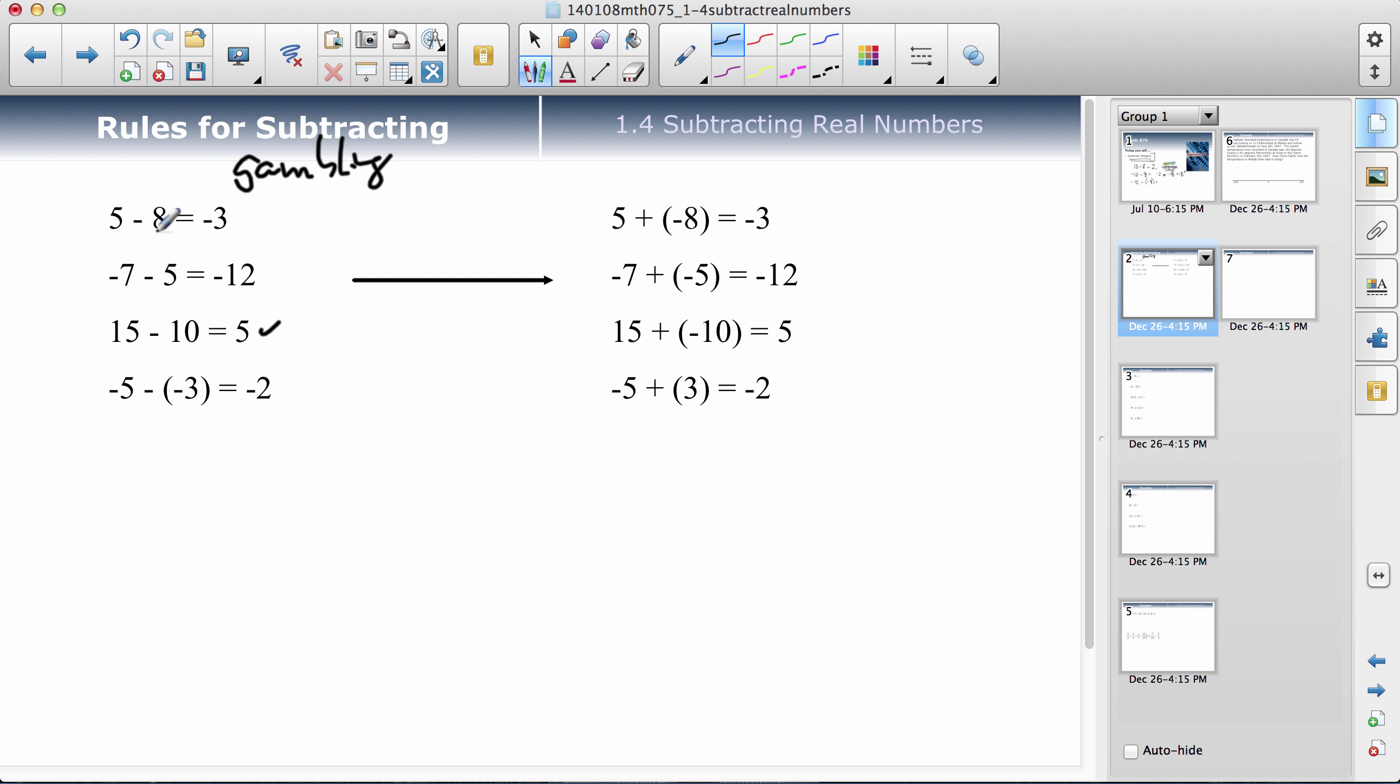I'm up five, I lose eight, I'm down three. I'm down seven, I lose another five, I'm still in the hole 12. Up 15, lose 10, I'm at five. Here's where my gambling thing, I don't know if it works or not. I'm down five, and then I lose a negative, you see where I've got troubles there.